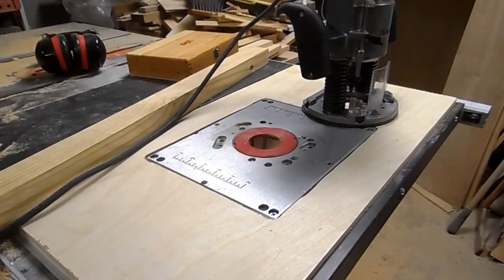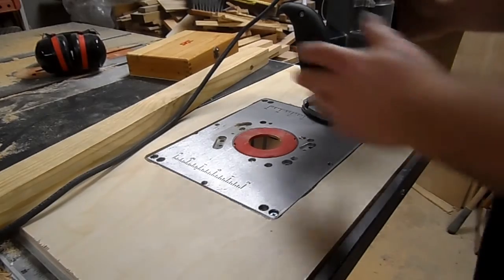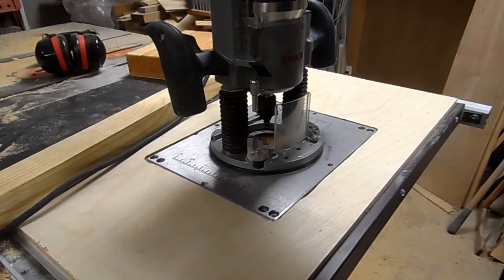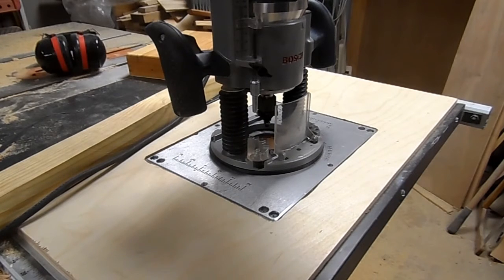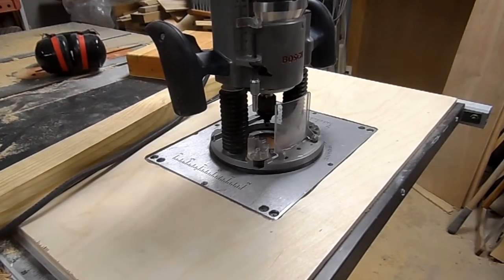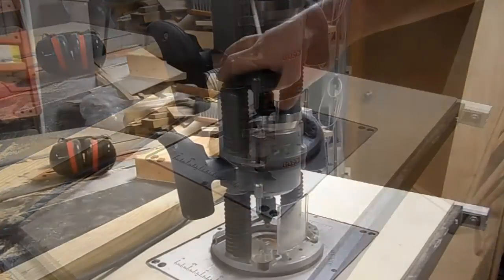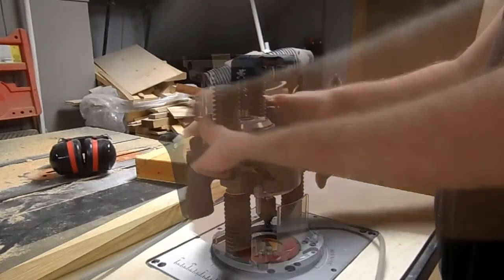All right guys, so how's this for luck. Just used the router to make this router insert for the table saw, just used this router to do it. Then I mounted the router in it and the router died. The second I mounted it in there, the router died. It's plugged in but it ain't running, so nothing's locked up.